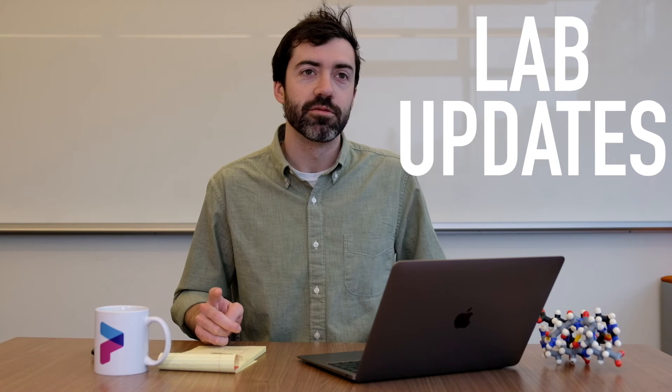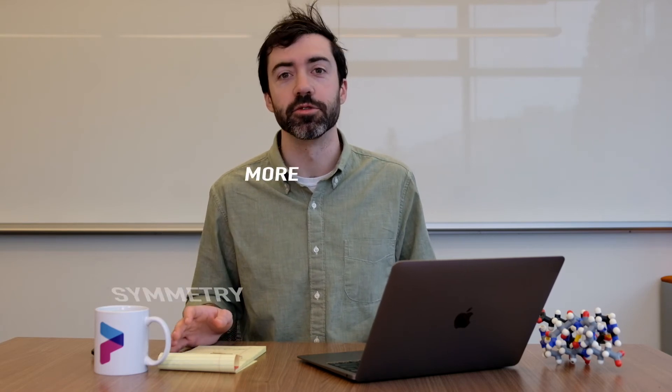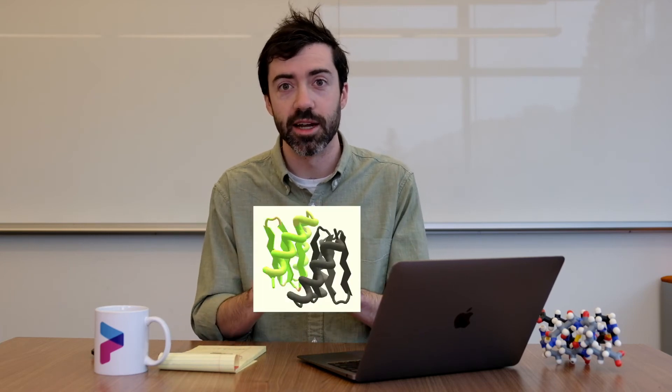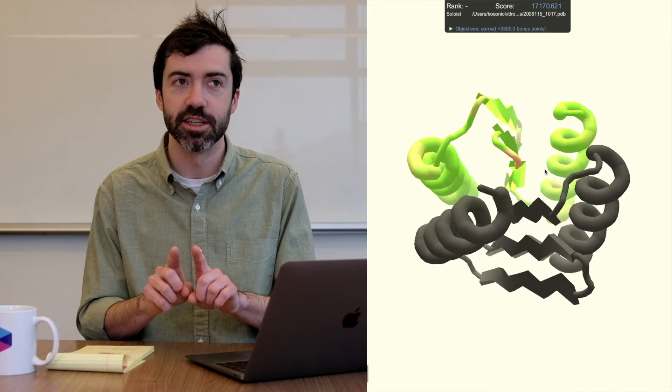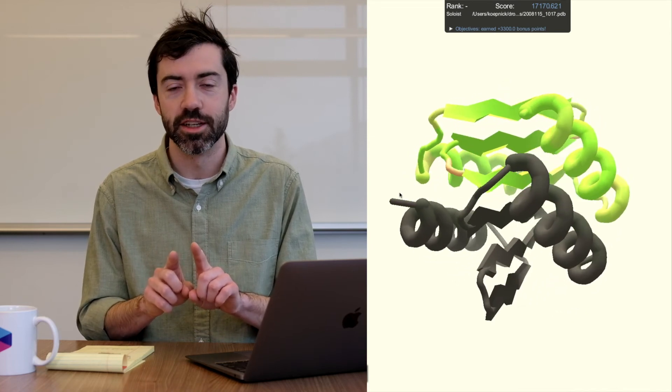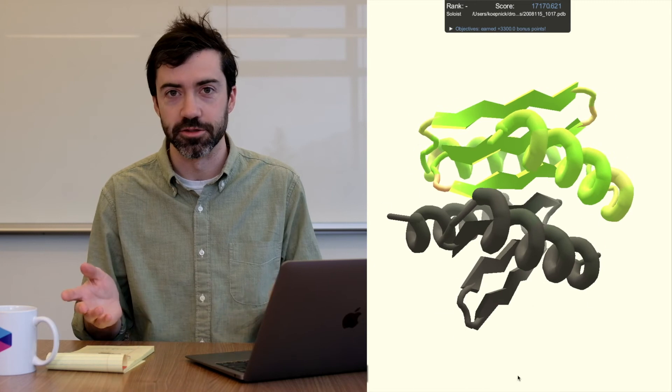We have two lab updates this month. First, we have been continuing to test previous symmetric designs from Foldit players. We have a few hits, it looks like, of some designs that come together to form dimers. And these are especially exciting because they have beta sheets at the interface.